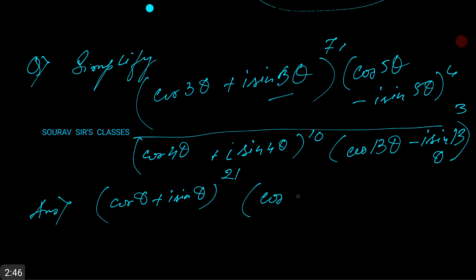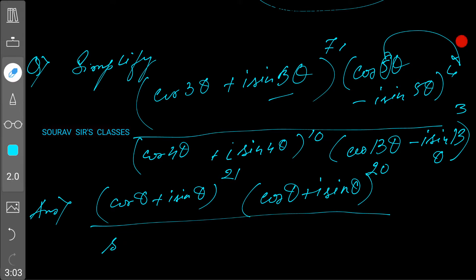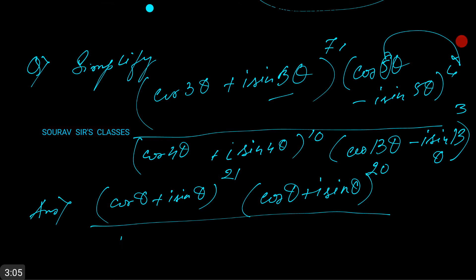multiply with 4, which gives us 20. Similarly, in the denominator, we have (cos θ + i sin θ) to the power 4, which goes out to give us 40.